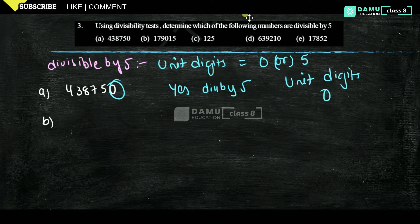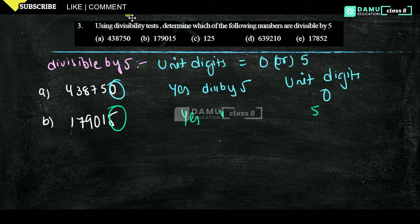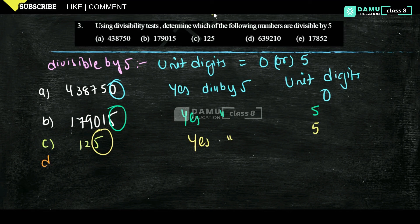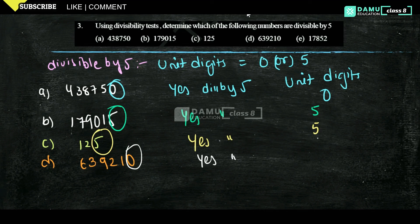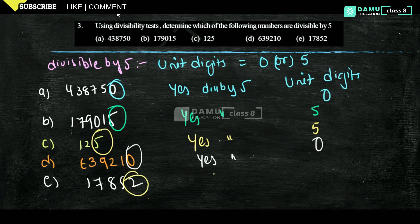Next is 125 — the unit digit is 5, so yes it is divisible by 5. Then 639210 — the unit digit is 0, so yes it is divisible by 5. Then 17852 — the unit digit is 2, so it is not divisible by 5. To summarize: any number divisible by 5 must end with 0 or 5.